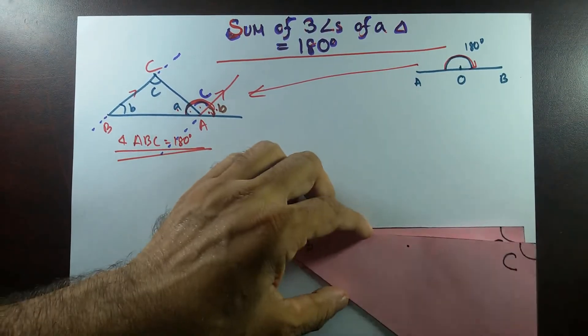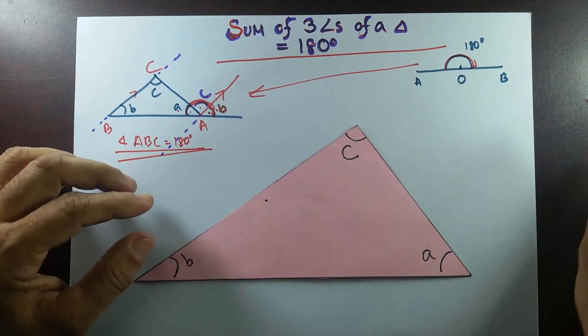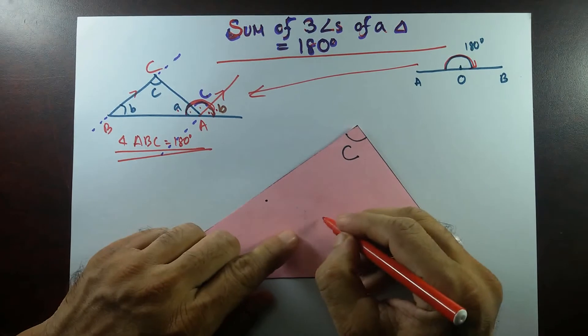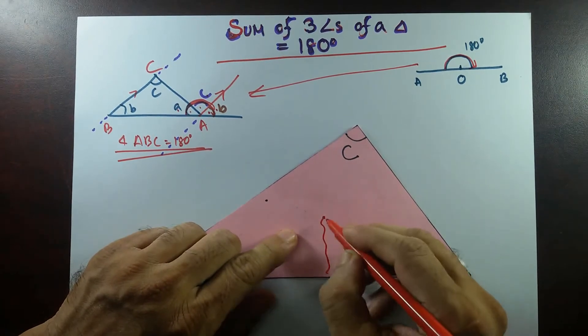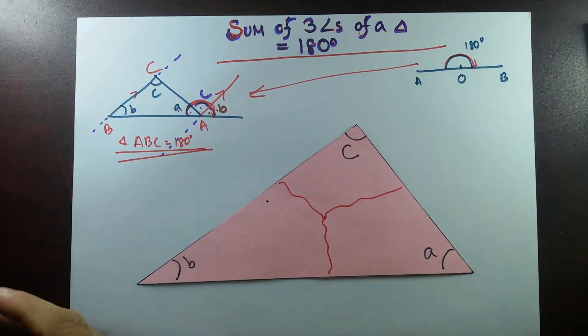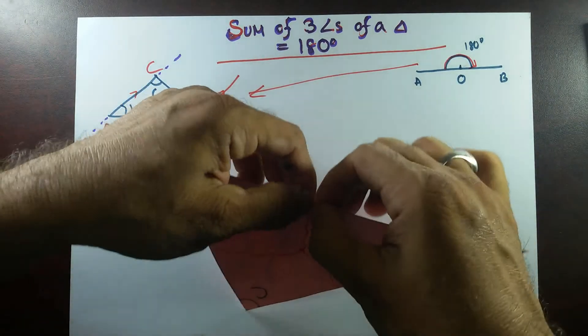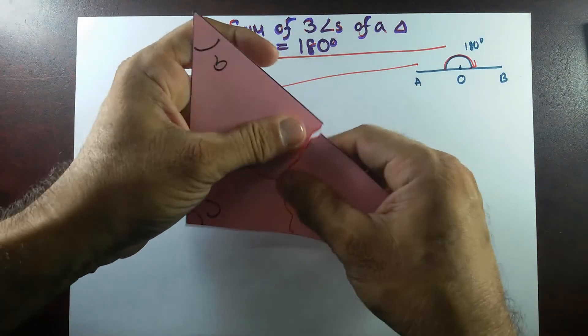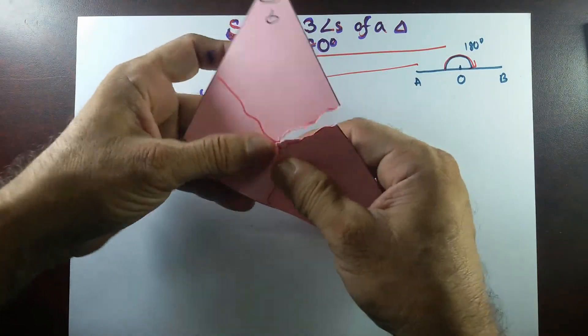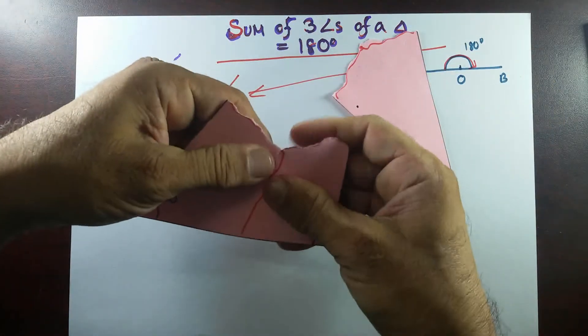I'll show you another neat proof. I'm going to take this triangle here, and what I'm going to do is I'm just going to cut it into pieces. I don't want to use the pair of scissors, I'll just use my hand to do that. So it's going to be uneven. I hope it will look nice.